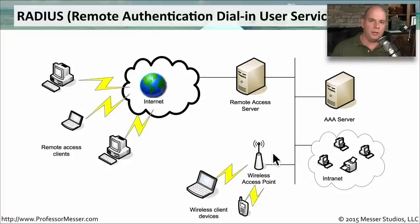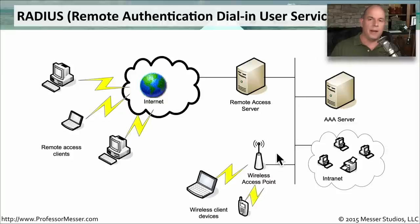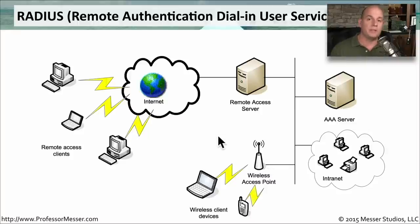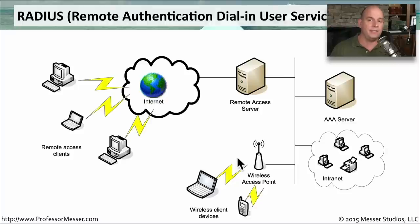These devices communicate back to a AAA server using a very standardized protocol called RADIUS — Remote Authentication Dial-In User Service. RADIUS is supported by remote access servers, wireless access points, firewalls, and many other devices. This RADIUS server ensures that wherever you happen to be — whether at a hotel or inside the building on a wireless device — you can use the same credentials you always use to log into every other device inside the organization.